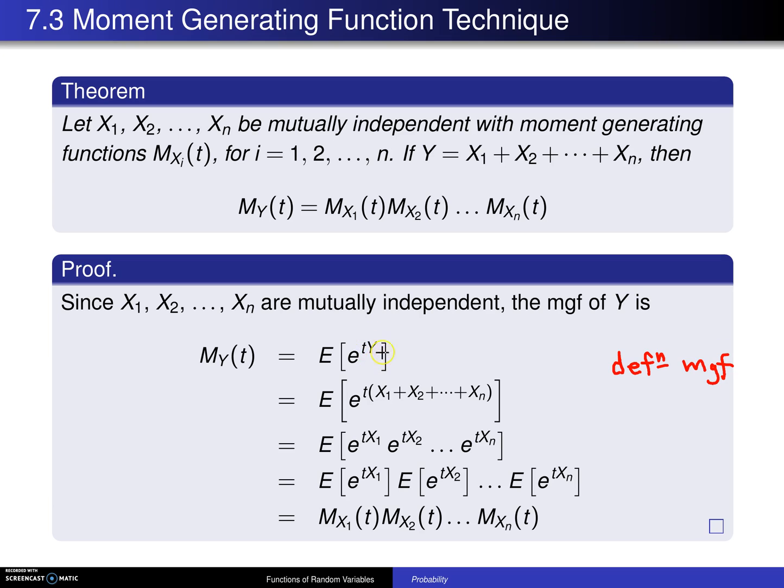Now, if you simply replace Y by the sum of the X's, that is by the definition of the random variable Y as the sum of the X's, you wind up with this.